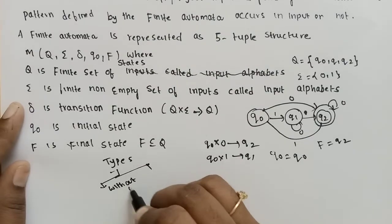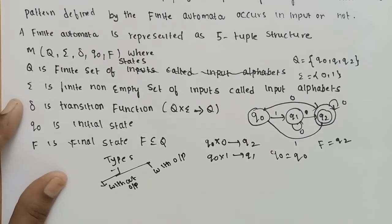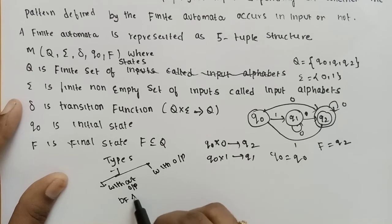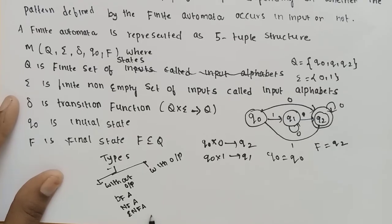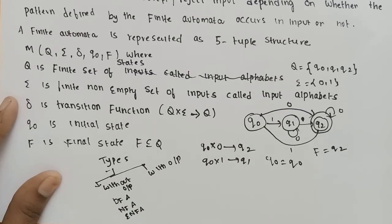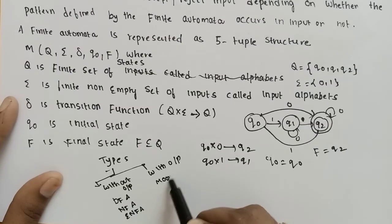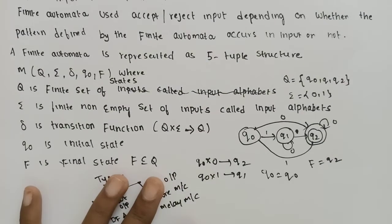Finite Automata is divided into two categories: without output and with output. Without output, the types are DFA (Deterministic Finite Automata), NFA (Non-Deterministic Finite Automata), and Epsilon-NFA. With output, the types include the Mealy machine and the Moore machine.